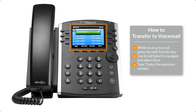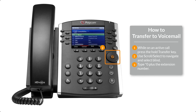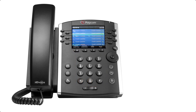To facilitate a transfer to voicemail, you must be on an active call. Press and hold the transfer button until you see the transfer select screen. Using your scroll select tool, navigate to blind and select it. Then type star 0 followed by the extension number. Remember, star 0 tells the phone system to transfer to the voicemail box of that extension. Thank you for your time and attention.